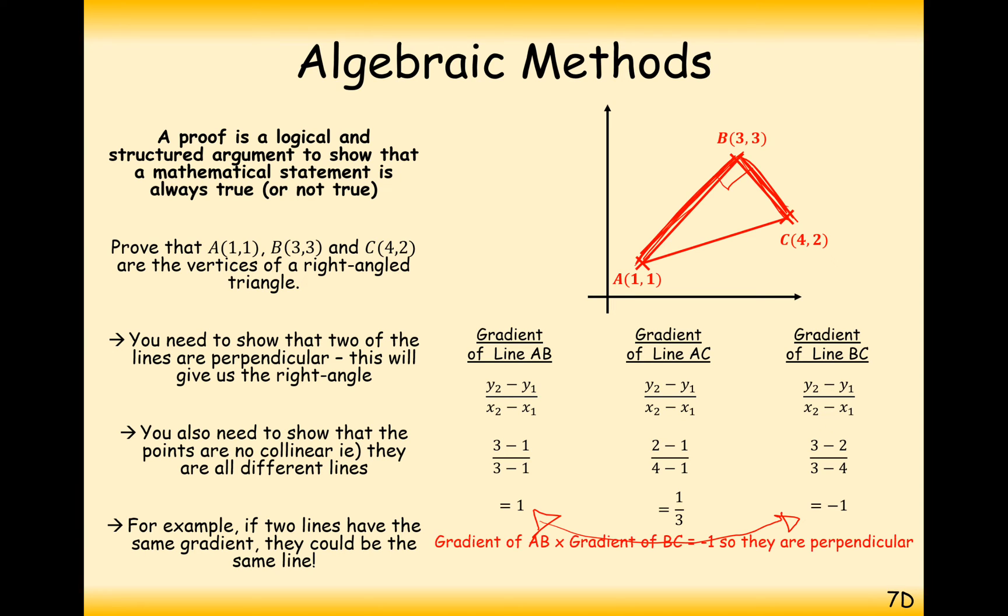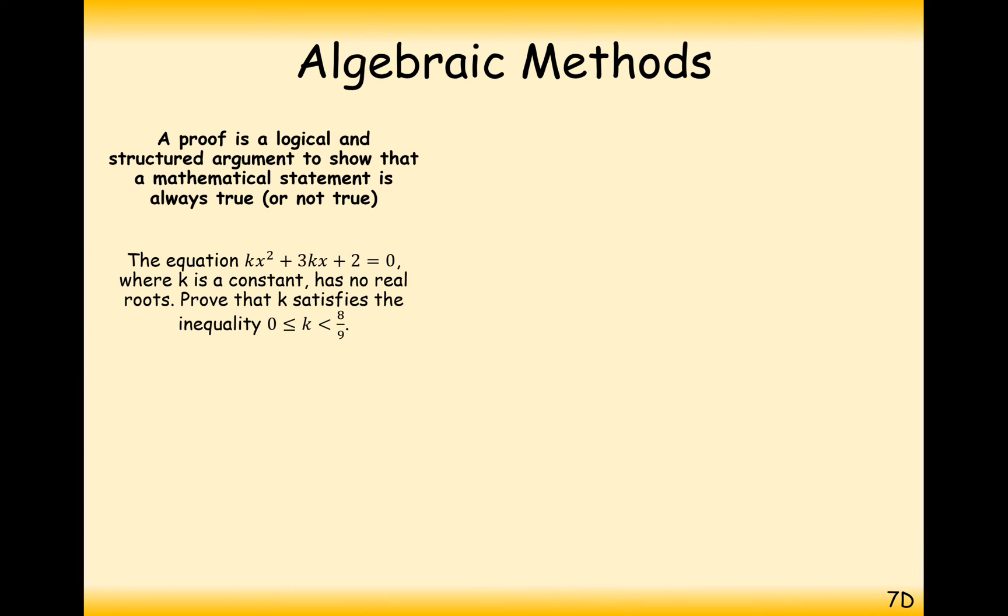that form the right-angle, because you can see here that the gradients will multiply together to make minus one. So the right-angle is there. So that's another way that we can prove something.